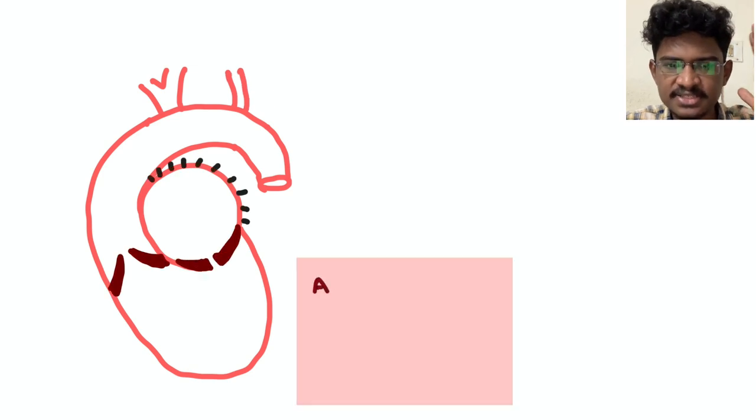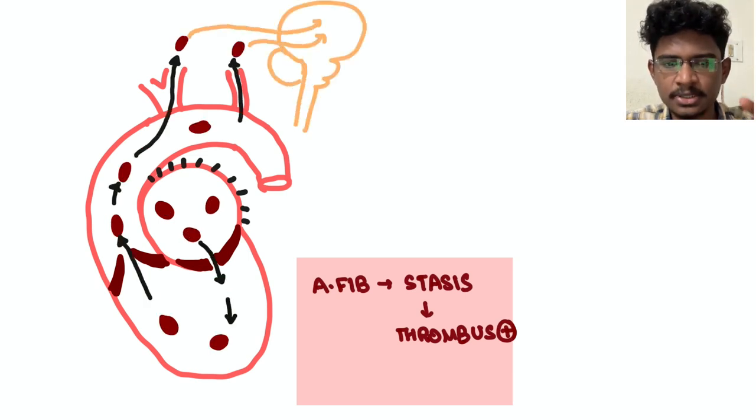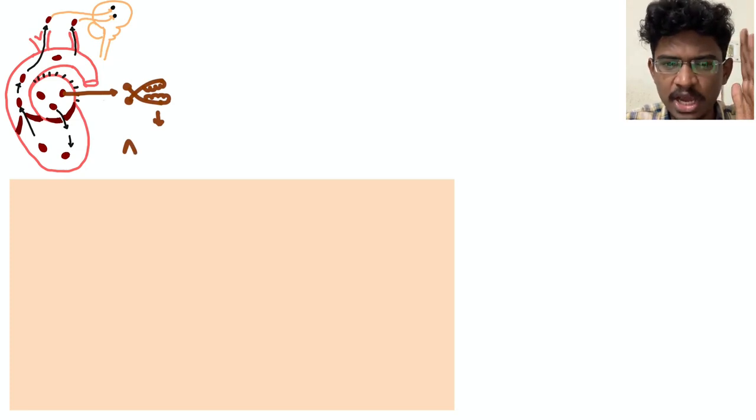First, in atrial fibrillation the atrium doesn't contract, blood stays there causing stasis followed by thrombosis. The thrombus forms and might embolize to the cerebral circulation leading to acute ischemic stroke.